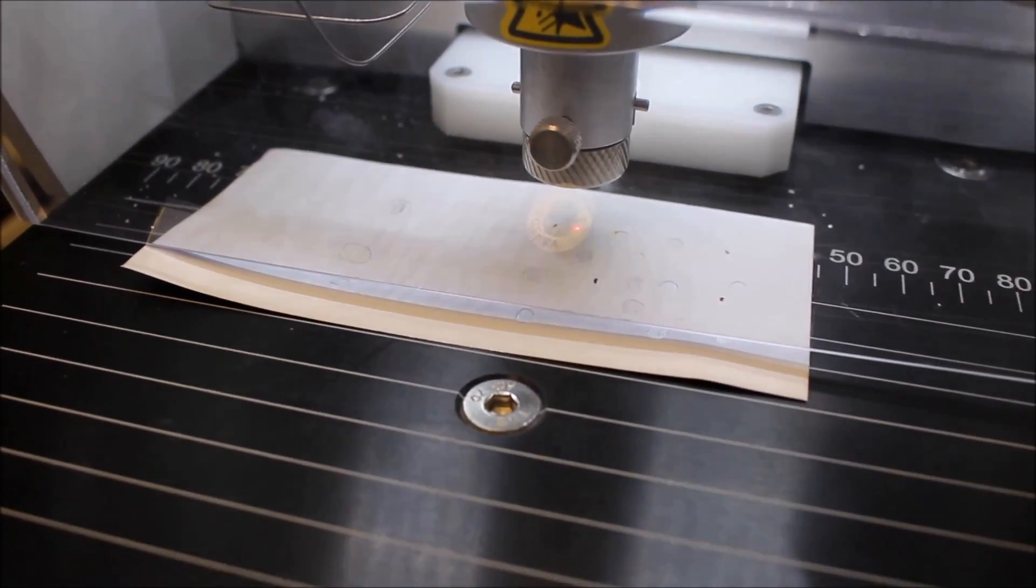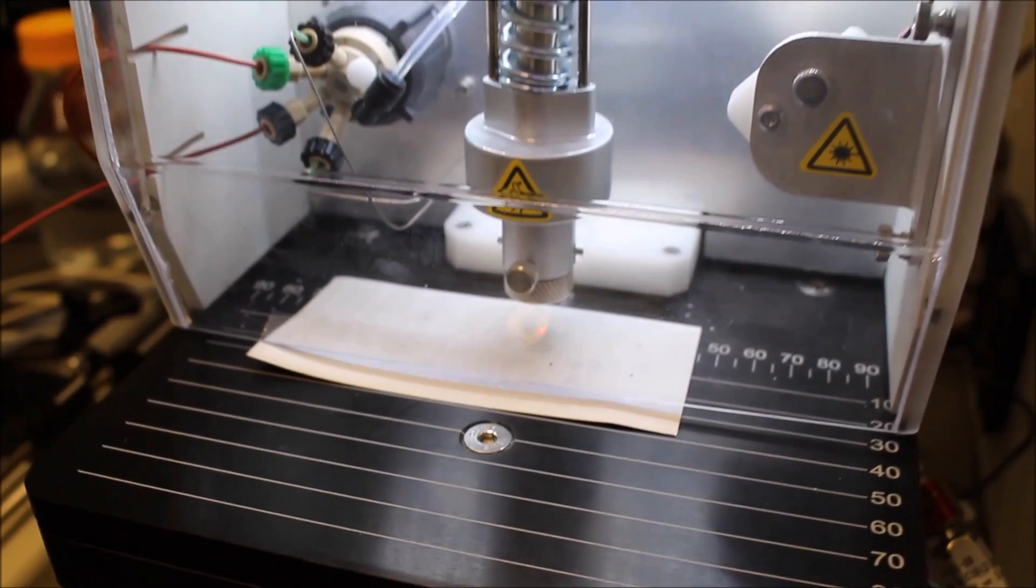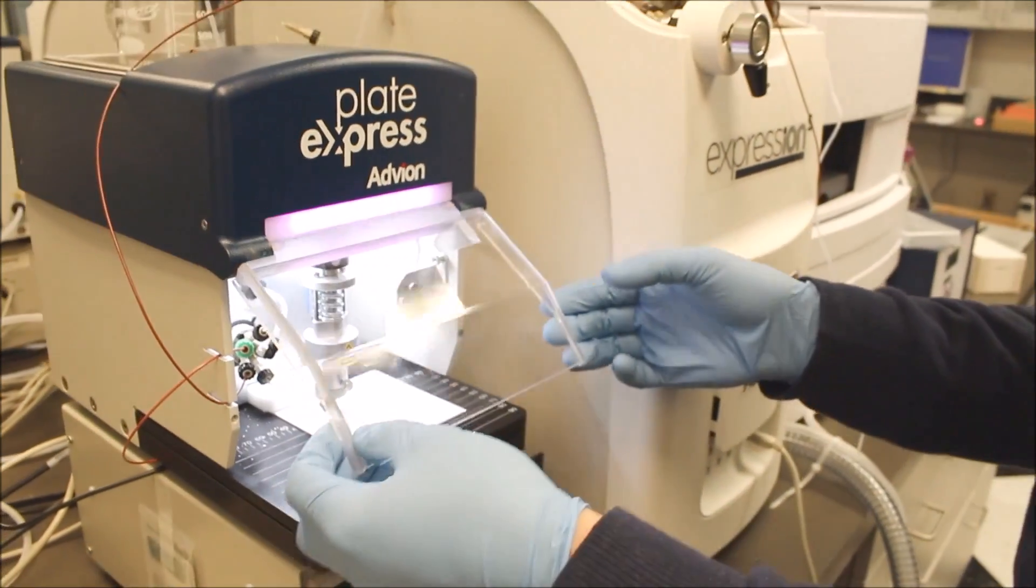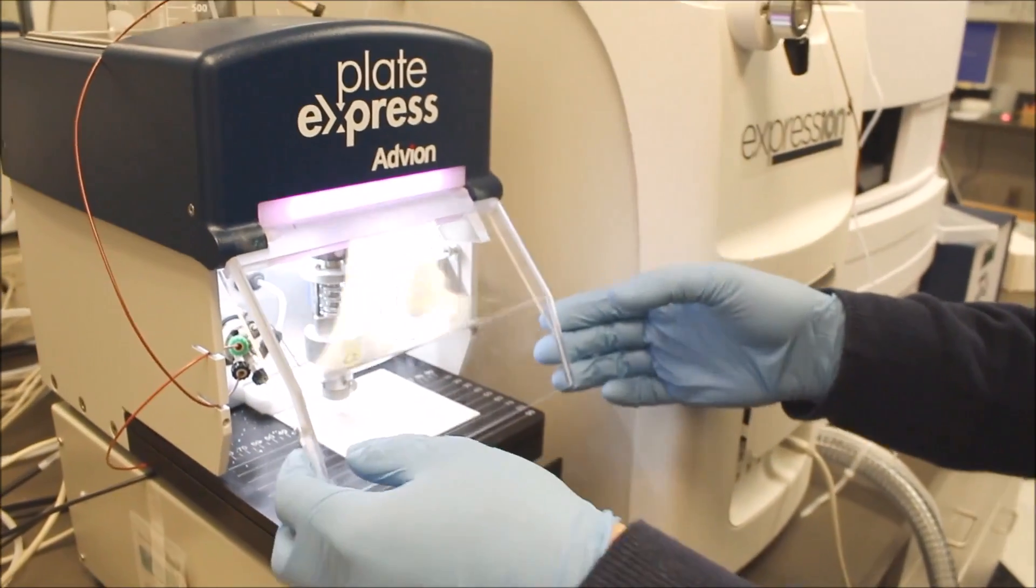The TLC spot contains the ideal amount of sample for mass spectrometry, so analyzing directly from the TLC plate is an ideal format to avoid overloading the mass spectrometer. Decoupling the separation from the analysis avoids system bottlenecks.